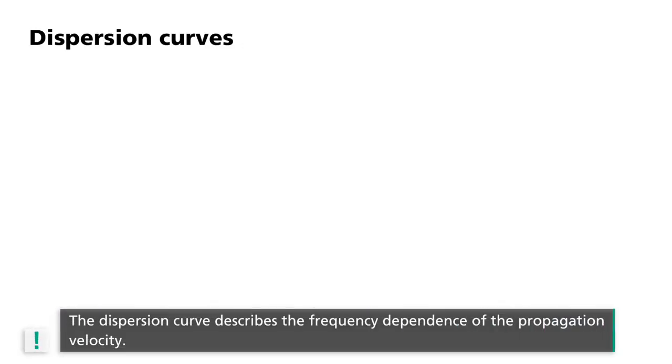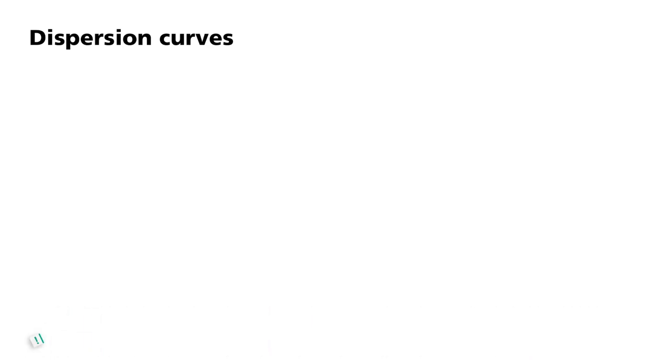In surface wave seismics, this property is used to determine the shear wave velocity as a function of depth. The frequency dependence of the propagation velocity is typically illustrated using a dispersion curve.